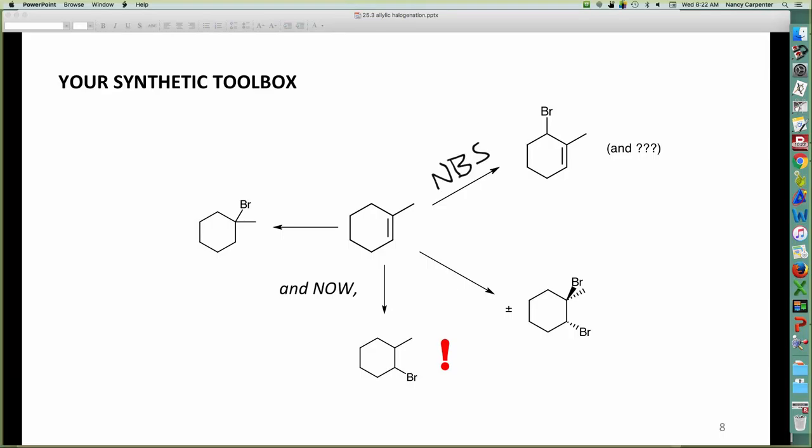So, just to put in your reagents, allylic halogenation, NBS, addition across a double bond, bromine, addition to the double bond, but just adding H and Br, well, HBr. And this, well, you're about to find out.